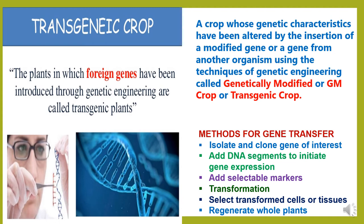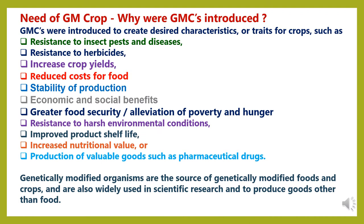Now we will study about transgenic crop or GM crop. The plants in which foreign genes have been introduced through genetic engineering are called transgenic plants. A crop whose genetic characteristics have been altered by the insertion of a modified gene or a gene from another organism using the technique of genetic engineering is called a genetically modified or GM crop or transgenic crop. There are various methods of gene transfer, like isolating and cloning the gene of interest, adding a DNA segment to initiate gene expression, adding selectable markers, transformation, selecting transformed cells or tissues, and regenerating whole plants.